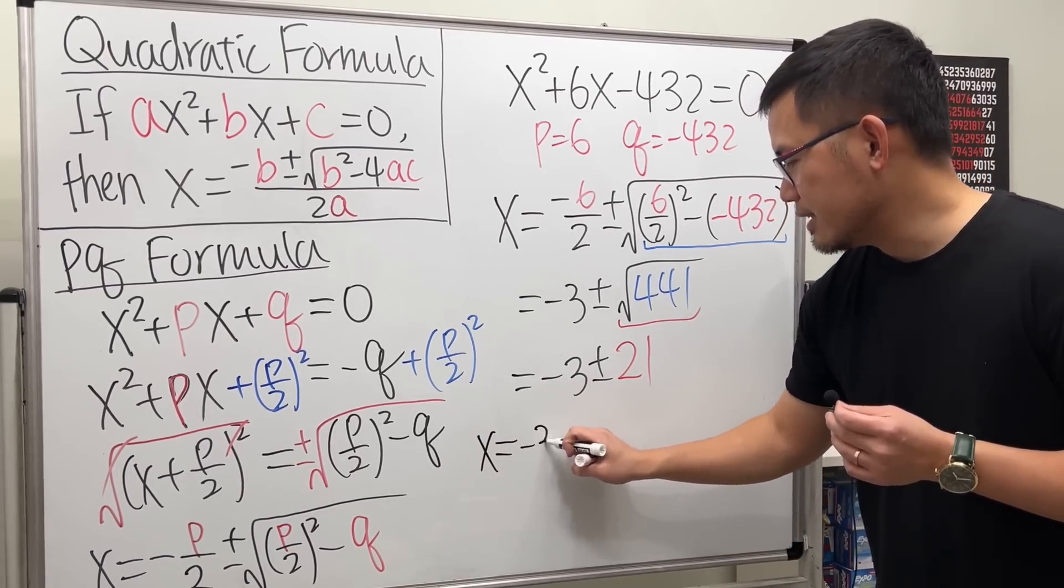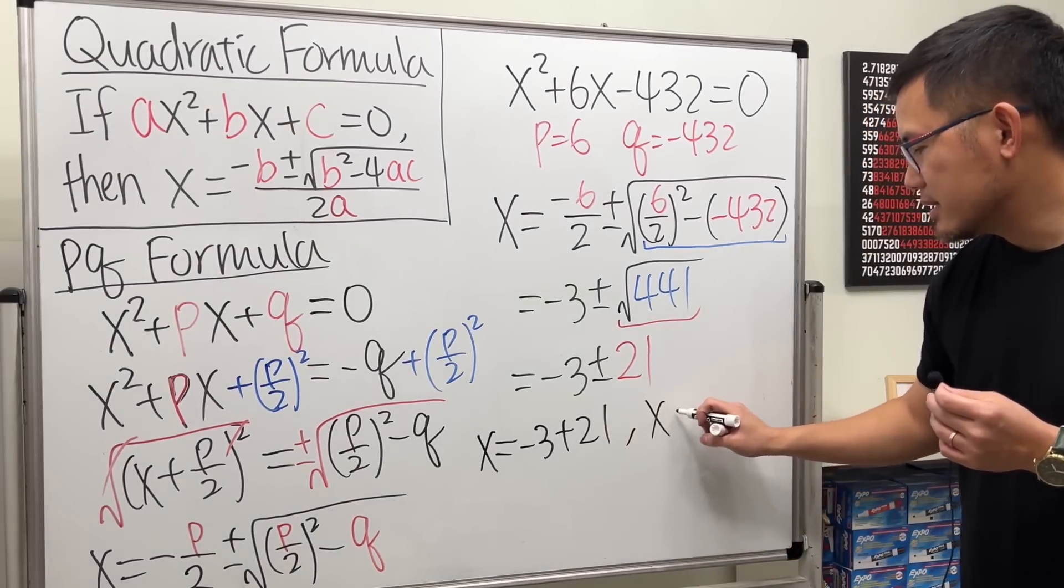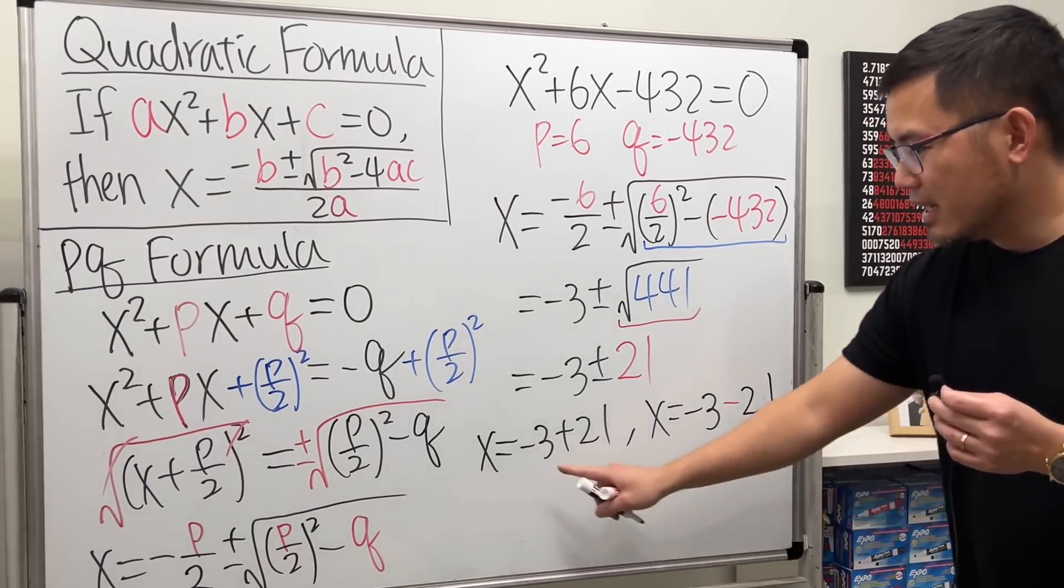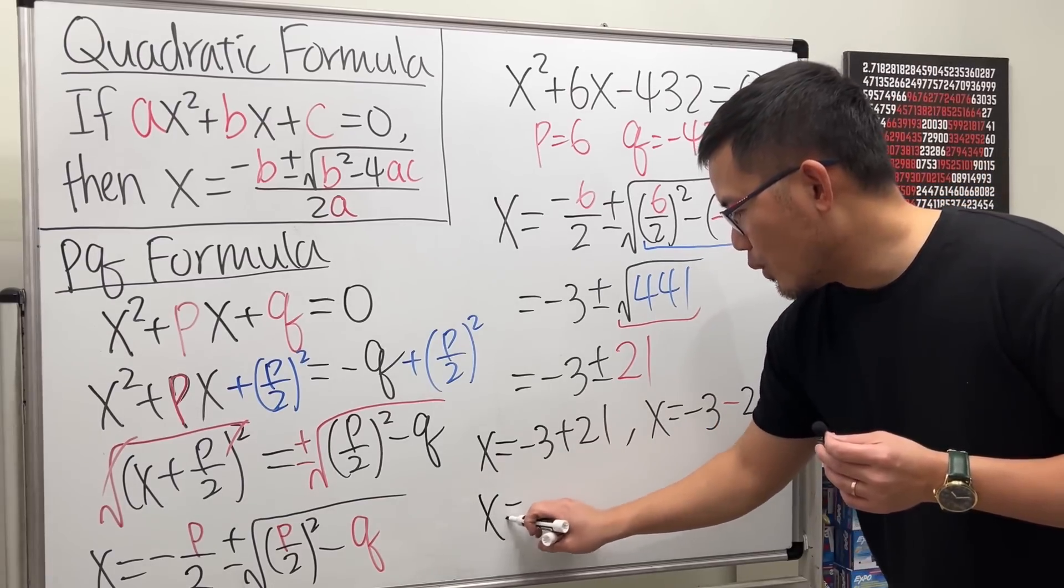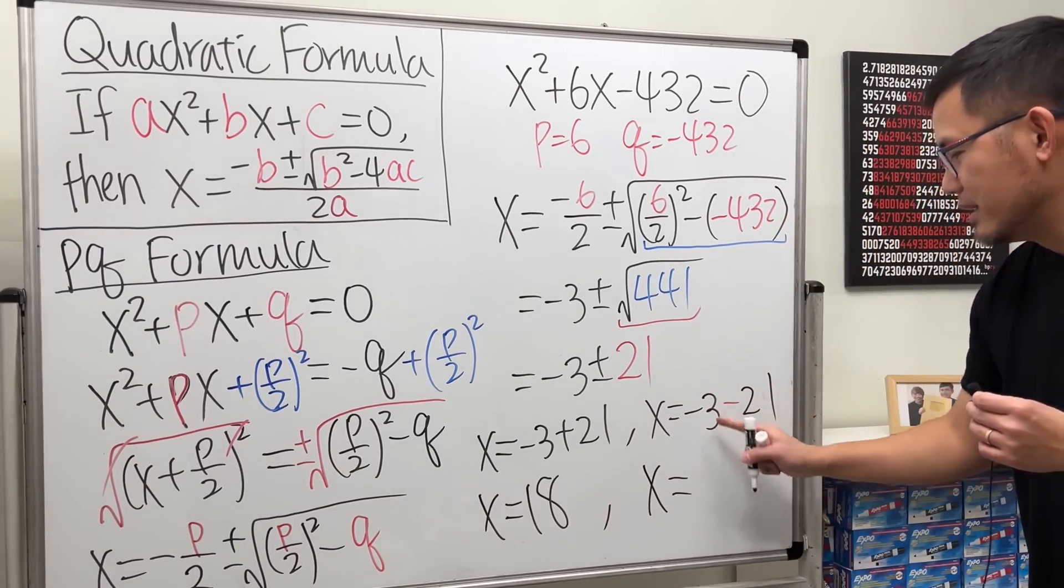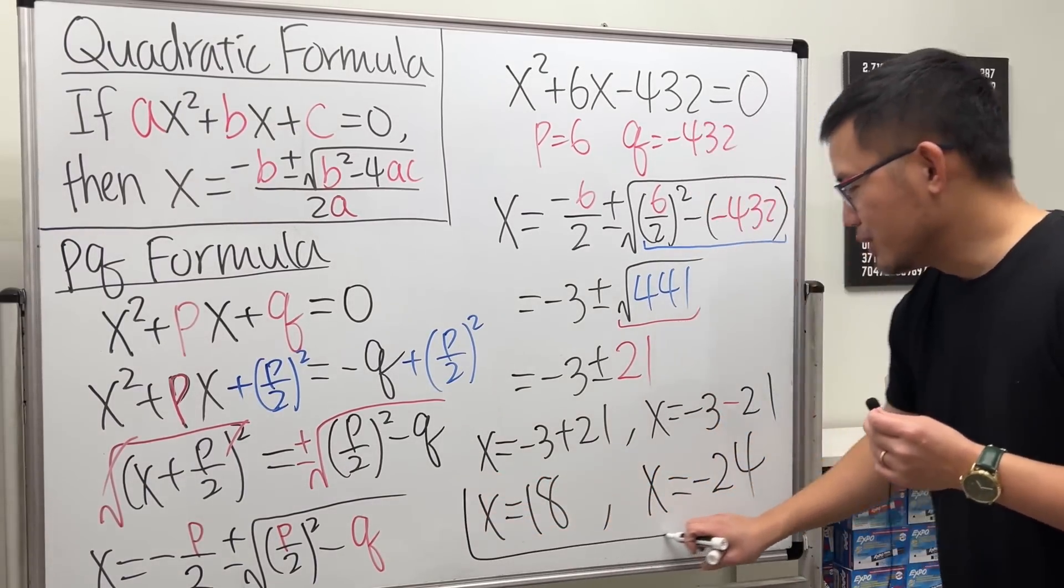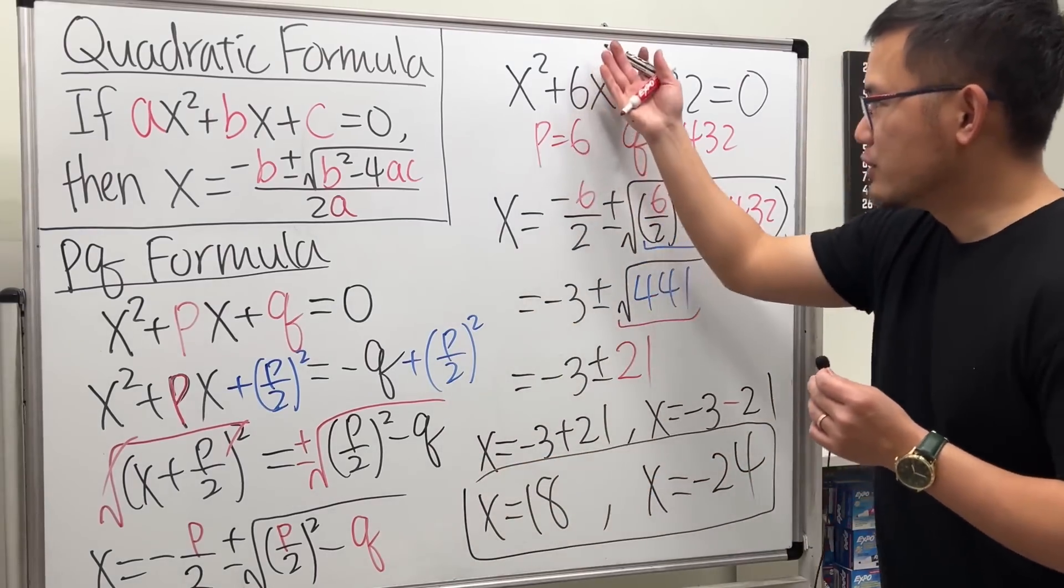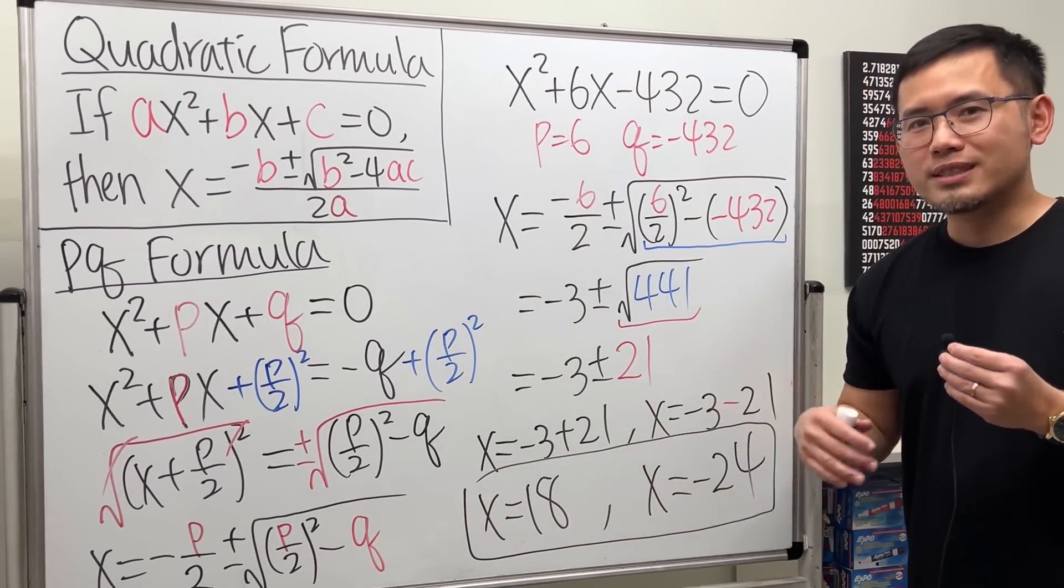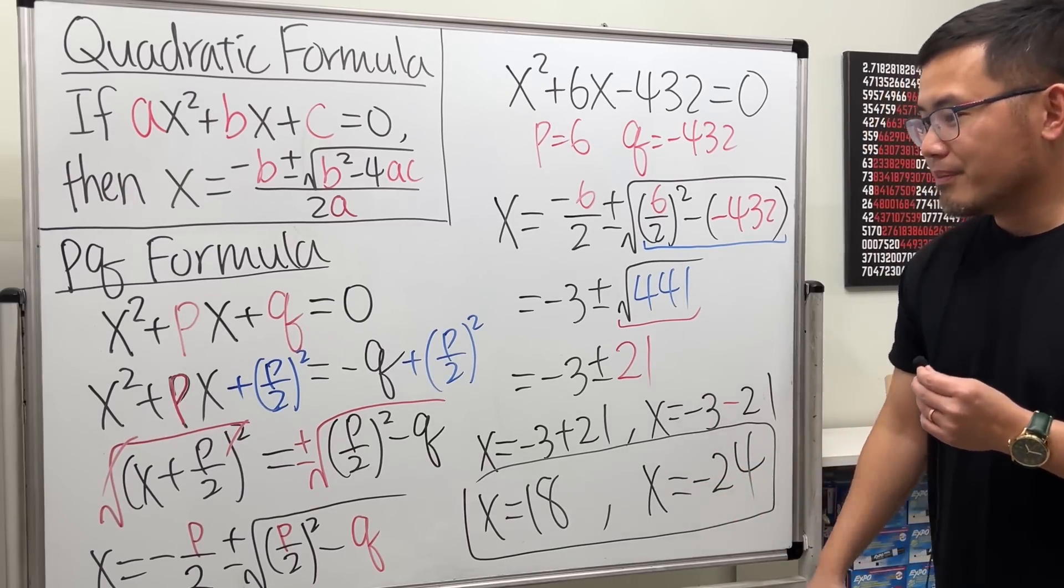x equals negative 3 plus 21. And the other one, x equals minus 3 minus 21. Here, we get x equals 18. And here, x equals negative 24. If we're just looking at this quadratic equation, then we have two solutions. In that previous video, it was a geometric equation. That's why we got rid of the negative answer. But have a look. Isn't this so much quicker?